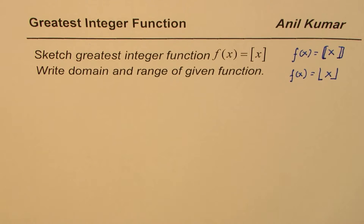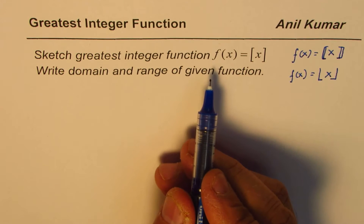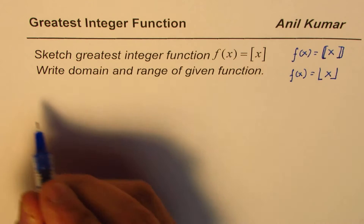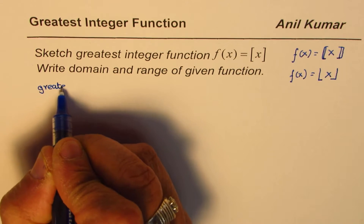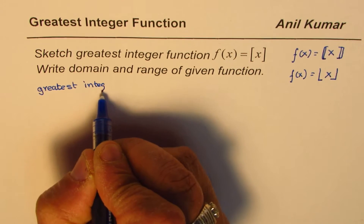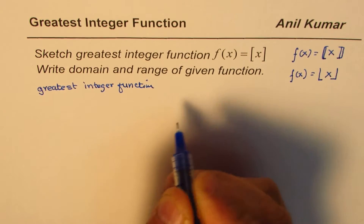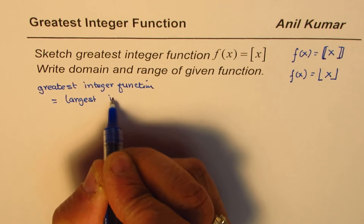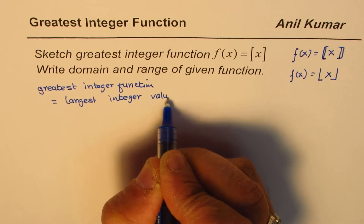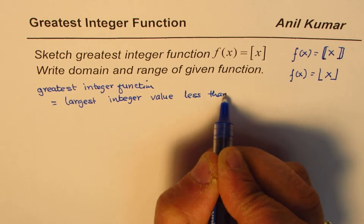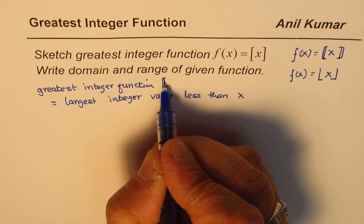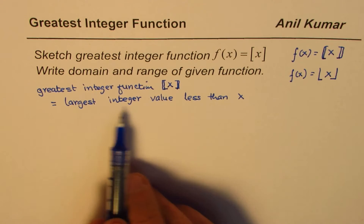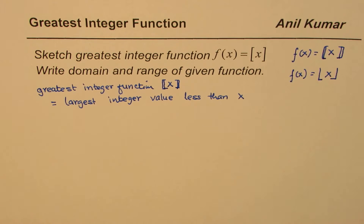So what is the greatest integer function? It is defined as the largest integer value that is less than or equal to x. Whenever we say greatest integer function, it means the largest integer value less than or equal to x. We want to use all three symbols so that whenever you refer to some material you can correlate.